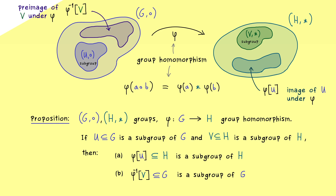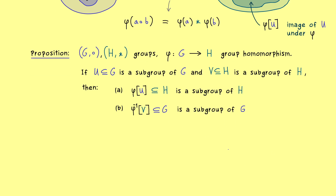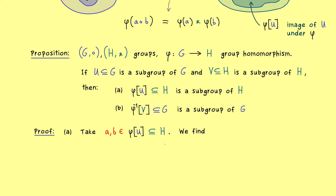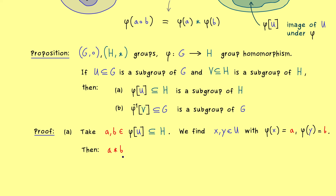Before we look at important examples, let's write down a proof for this general result. It turns out it's not so complicated. Let's start with part A. We take two elements A and B from the image of U — so they are elements in the group H, living on the right hand side. We find corresponding elements x and y on the left hand side, in particular in U, such that phi(x) = A and phi(y) = B. That's just the definition of the image. Now we calculate what A · B actually is, wanting to show it lies in phi(U) again. Substituting A and B we get phi(x) · phi(y).